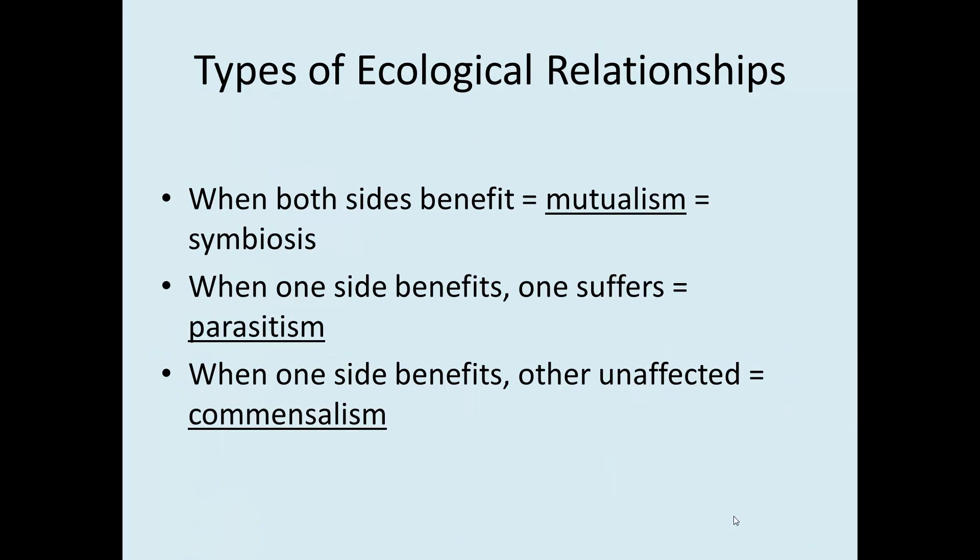There are different types of ecological relationships. When both sides benefit, it's called mutualism, which is generally referred to as symbiosis. When only one side benefits and one suffers, it's called parasitism — for example, the tick on the back of a buffalo. And when one side benefits and the other is unaffected, it's called commensalism. Think of plants that grow on trees in the rainforest — they're not choking the tree, just using it for support, while they benefit by being higher in the canopy.